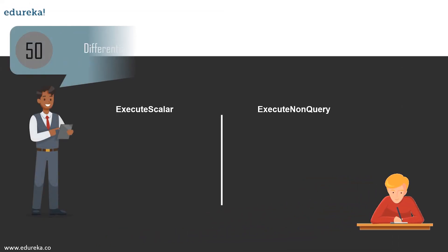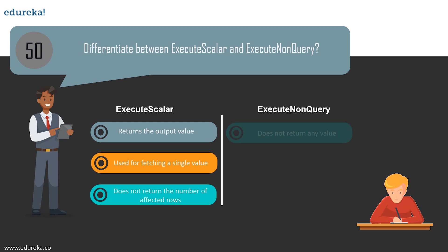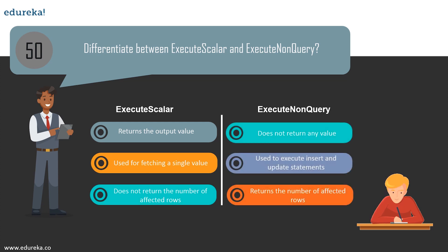Question 50: difference between ExecuteScalar and ExecuteNonQuery. ExecuteScalar returns only the value from the first column of the first row of your query. ExecuteReader returns an object that can iterate over an entire result set. ExecuteNonQuery does not return data at all — only the number of rows affected by an INSERT, UPDATE, or DELETE. This brings us to the end of this session.